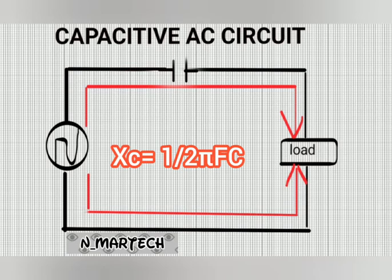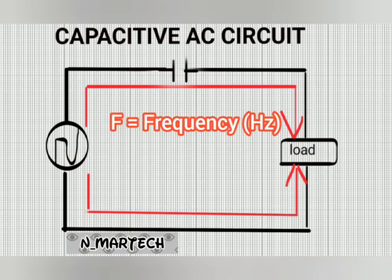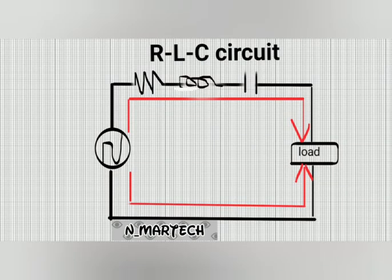Capacitive reactance is represented by XC (X subscript C). It is inversely proportional to frequency and given by the formula: XC = 1 / (2πFC), where F equals frequency in Hertz and C equals capacitance in Farads.